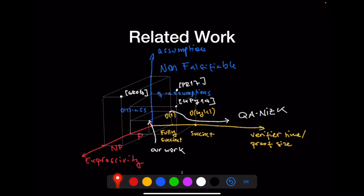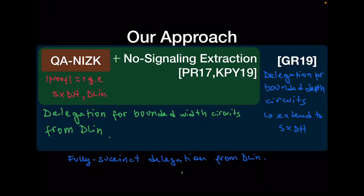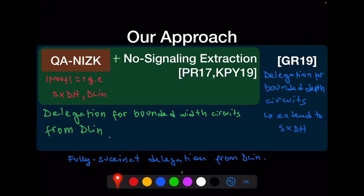What we are going to do is start from QA-NIZK and use other techniques — like those of Kalai-Paneth-Rothblum and Paneth-Rothblum — to extend the expressivity of QA-NIZK in order to get delegation for P. We start from QA-NIZK as our building block because it has good proof sizes (just a constant number of group elements) and is based on good assumptions. We will use the techniques of Paneth-Rothblum and Kalai-Paneth-Rothblum, specifically what they call quasi-arguments with non-signaling extraction.